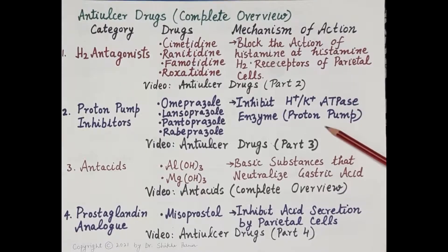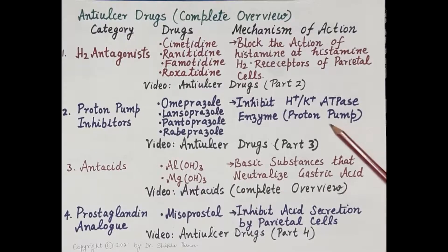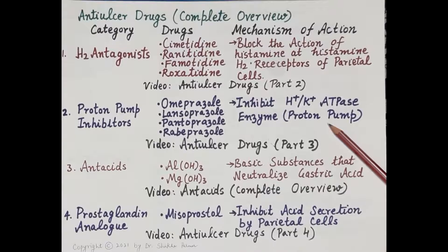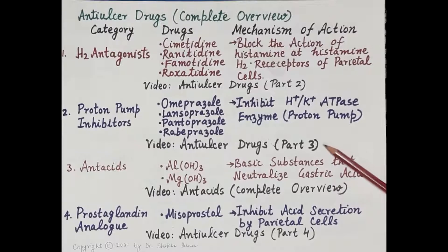The second category is proton pump inhibitors. Examples include omeprazole, lansoprazole, pantoprazole, and rabeprazole. These drugs inhibit hydrogen-potassium ATPase — the proton pump — thereby inhibiting the final common pathway for secretion of gastric juice. Therefore, proton pump inhibitors are the most efficacious and most effective of all anti-ulcer drugs. Complete pharmacology is covered in anti-ulcer drugs part 3.